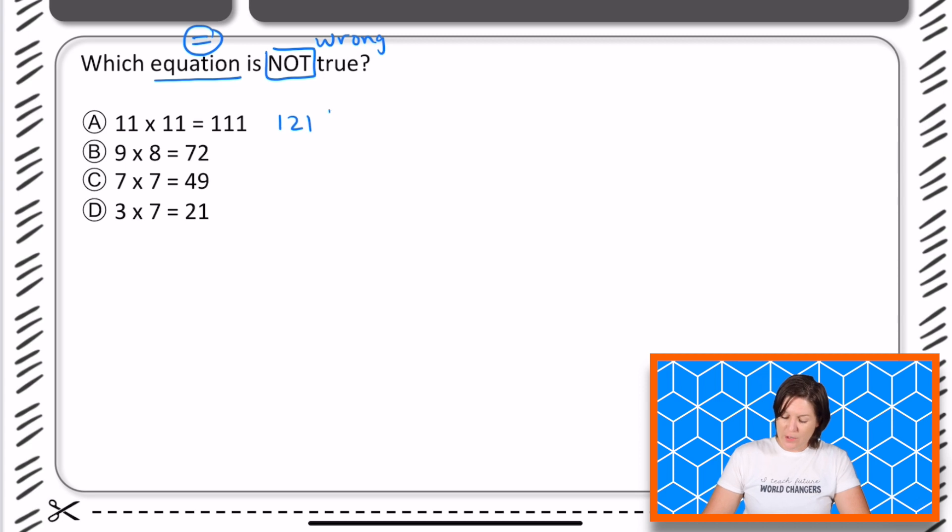Okay, so this is the one that is wrong. So I'm going to go ahead and put a question mark there because that might be the one that I choose. One way that you can think about this, 11 times 11 is that we can break it down into, I know what 11 times 10 is, and then I can add one more 11.